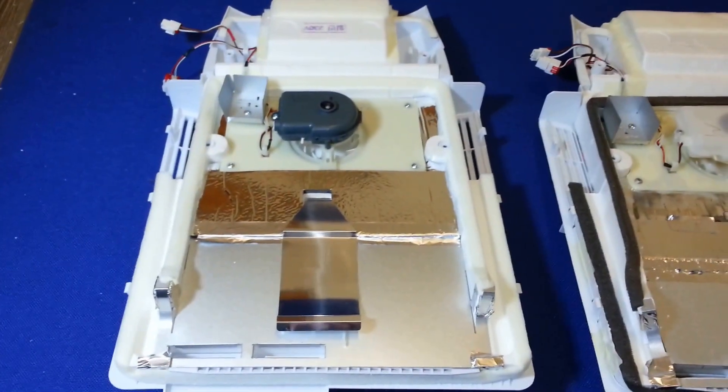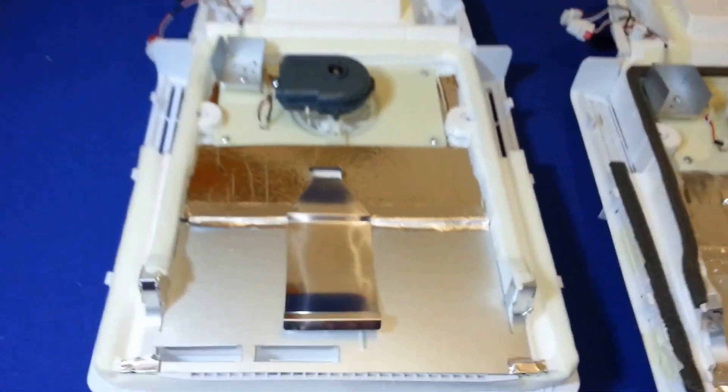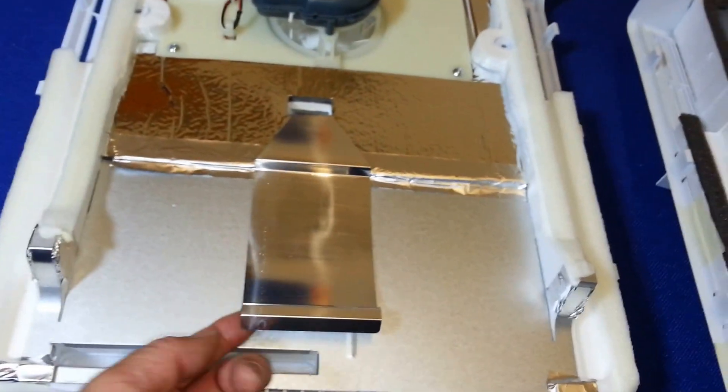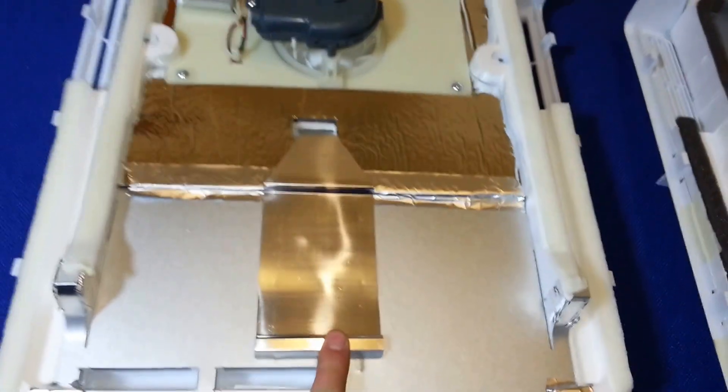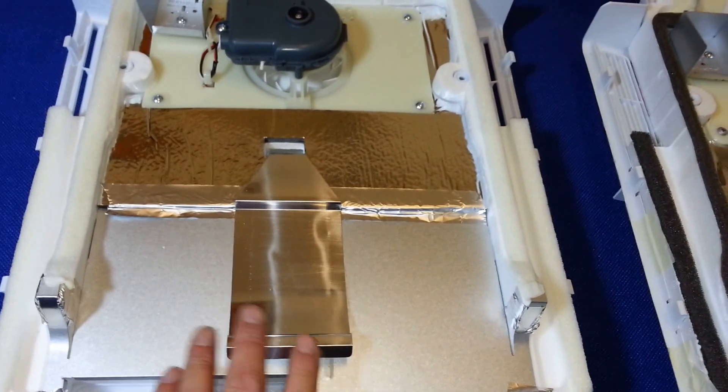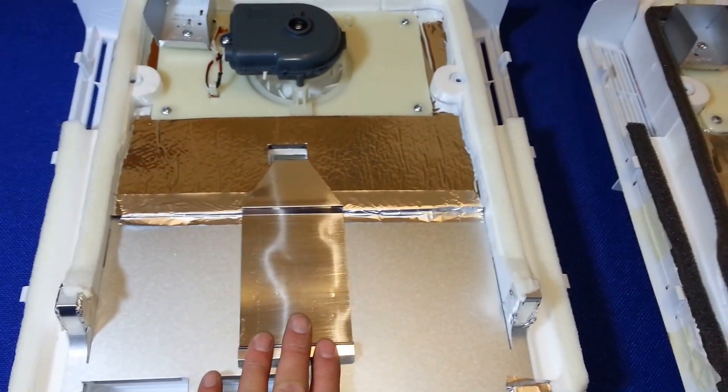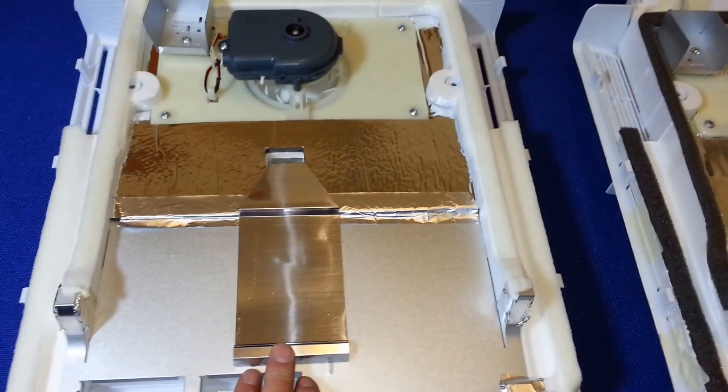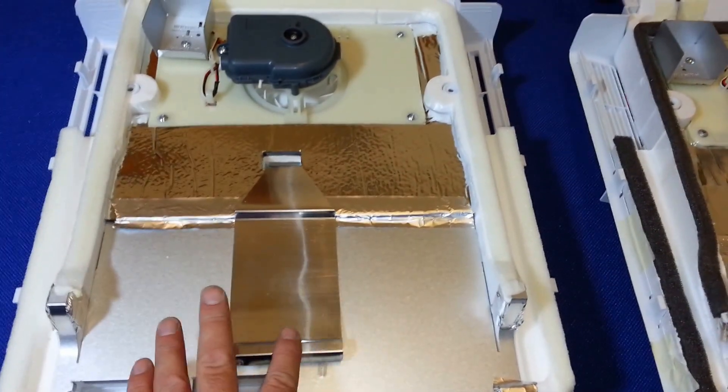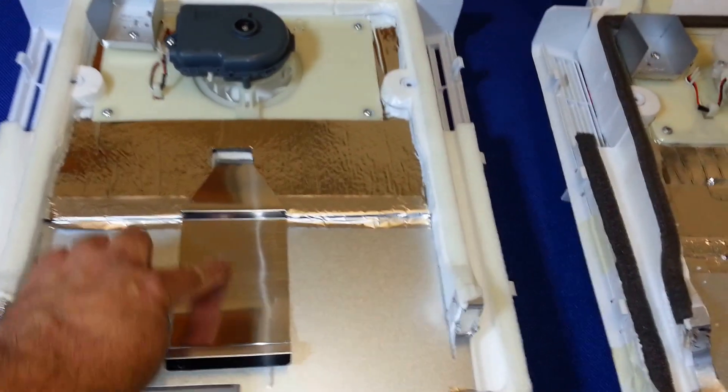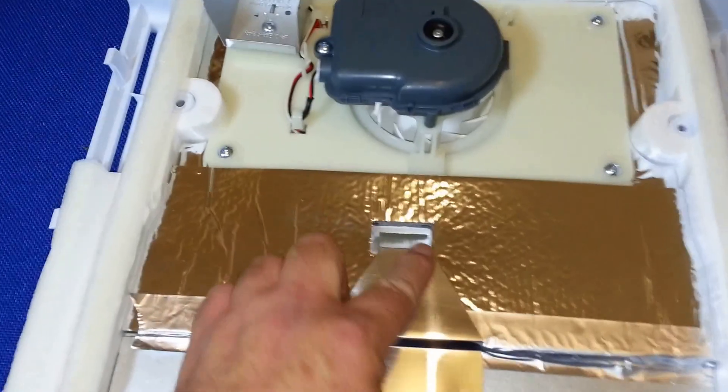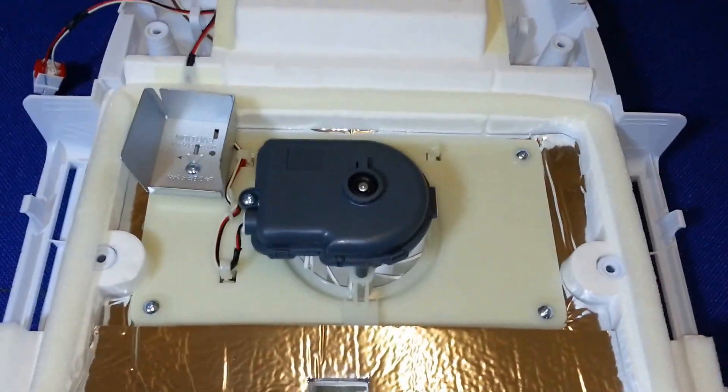The main difference on the new cover is this part here which is called the heat transfer clip. Basically what it does is when you put this cover on, it marries back up with the defrost element, so when the defrost element comes on you get heat. It transfers up onto this plate into the drain channel and keeps the fan clear.